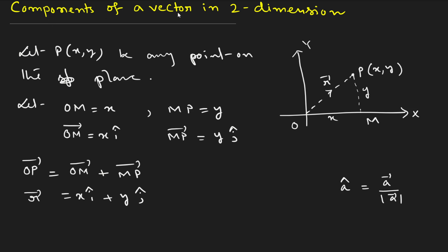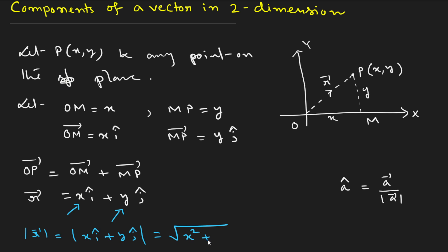So here x is the x-component and y is the y-component of the vector. When we talk about components, we don't say i cap and j cap — the x-component is x and y-component is y. The magnitude of r bar, which is |x·i cap + y·j cap|, equals √(x² + y²).